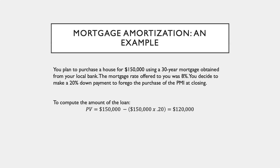So in this regard, we can compute that $150,000 times 80% — or equivalently, $150,000 minus ($150,000 times 20%) — gives us $120,000. So $120,000 is the amount that you are going to apply for in your mortgage in order to purchase the house at $150,000.